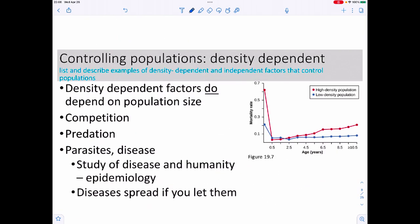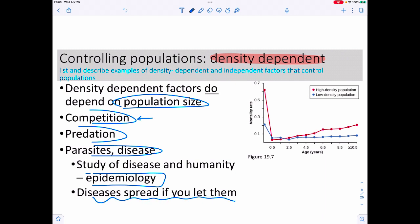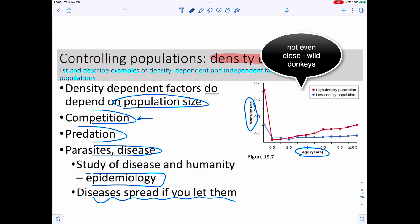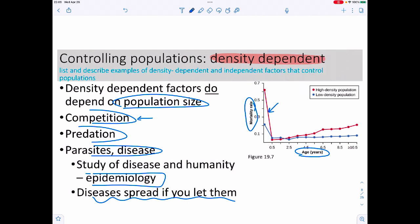This is in contrast to density-dependent factors, where population size does matter. This can occur due to competition for resources, predation, or parasites and disease, which is what you're doing in lab with epidemiology this week. Diseases spread if you let them, and disease is a really good way of controlling population size. This graph looks at mortality rate in elk or antelope, showing those in high-density populations tend to die a lot more than those in low density, and the reason is disease.